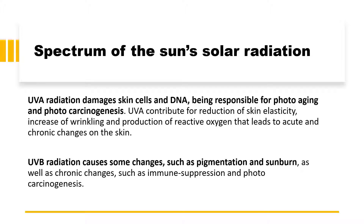Ultraviolet B radiation causes changes such as pigmentation, sunburn, as well as chronic changes such as immunosuppression and photocarcinogenesis. UVB radiation is basically concerned with sunburn and pigmentation, whereas UVA radiation penetrates deeper into the skin and damages skin cells and DNA, ultimately leading to photoaging effects.